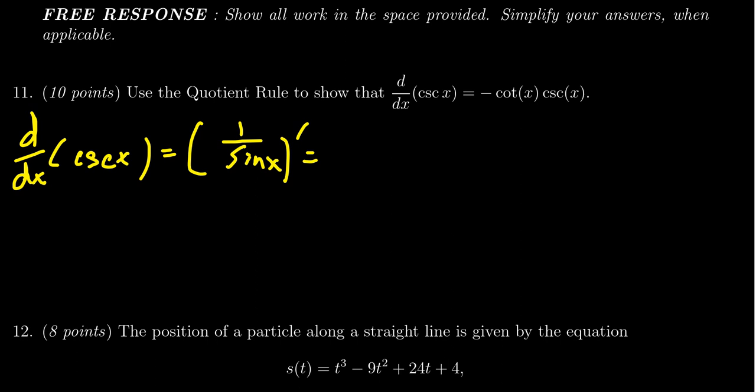We're going to get low d high minus high d low, square the bottom. Here we go. So we get a sine squared in the denominator. Some things to note.